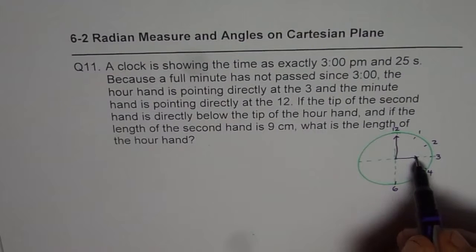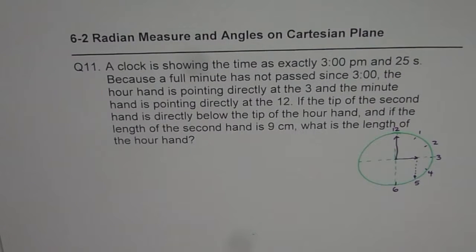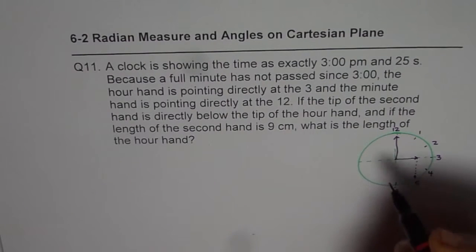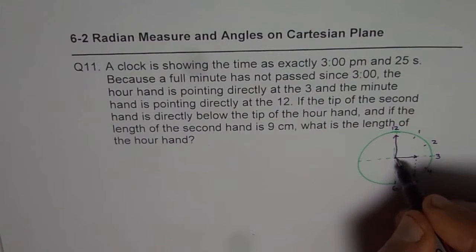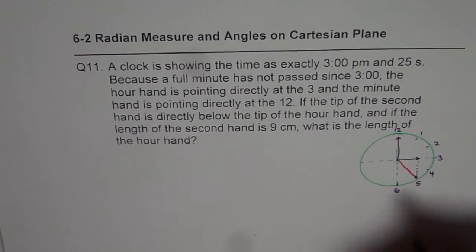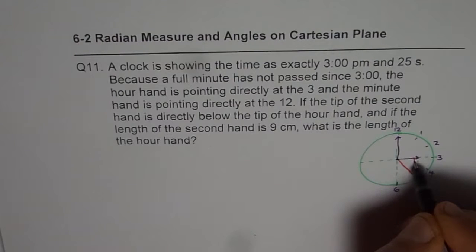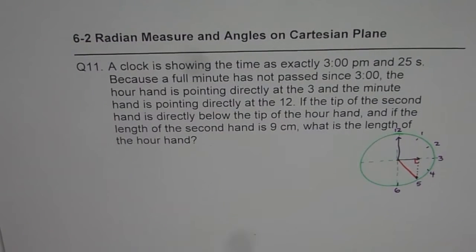The second hand is directly below this. Let me use different ink for it. Let us say this is our second hand. When it is directly below, it makes 90 degrees angle.